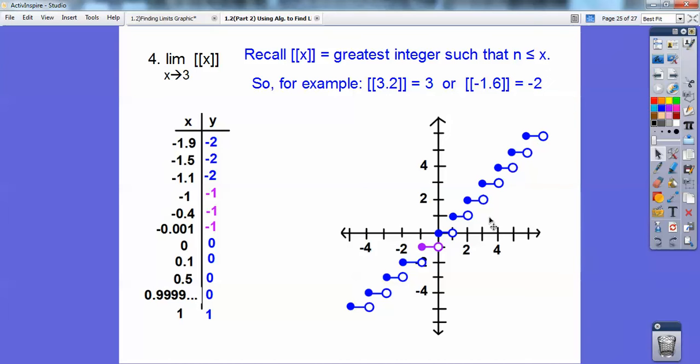So let's look at this. When I approach, here's x equals 3. When I approach x equals 3 from the left, y equals 2. When I approach x equals 3 from this side, it jumps up here to y equals 3. So they're not the same value. Therefore, it does not exist.